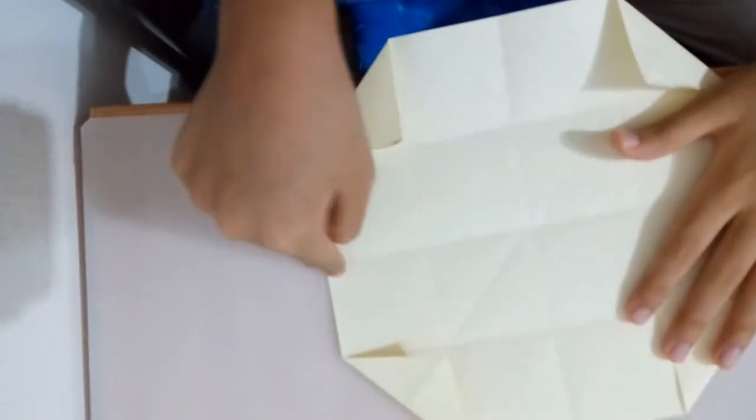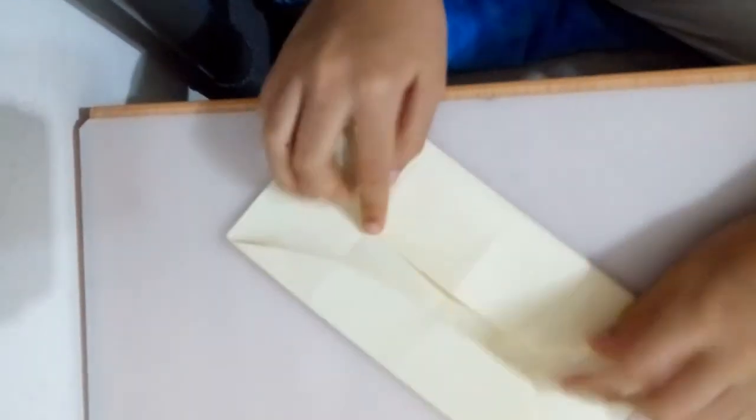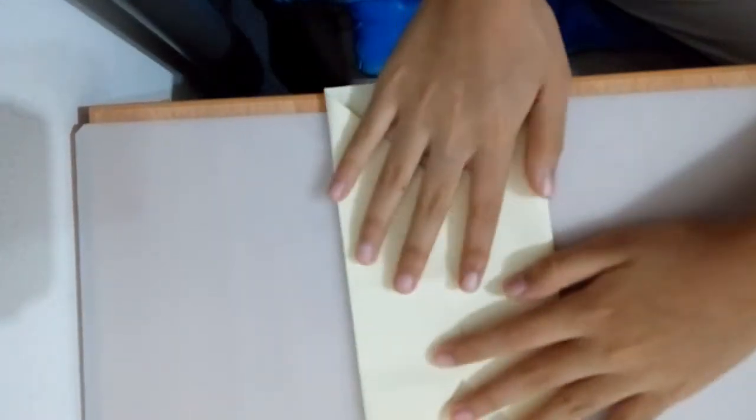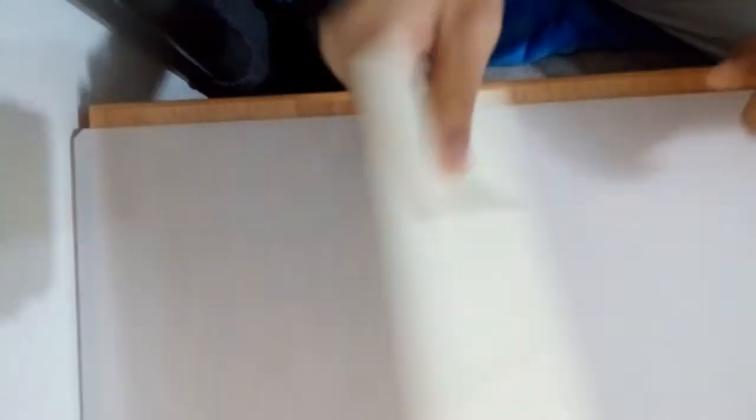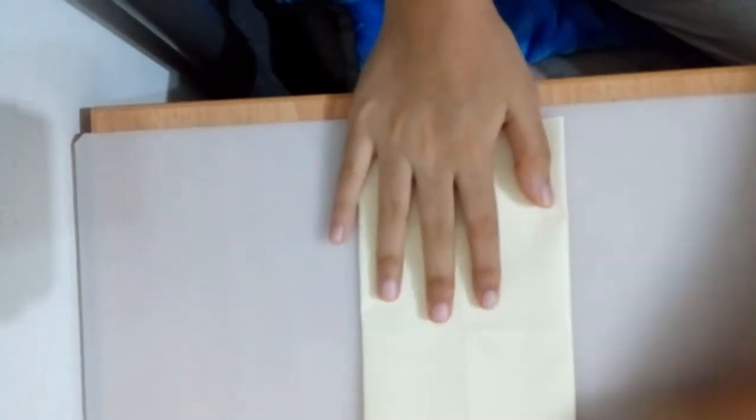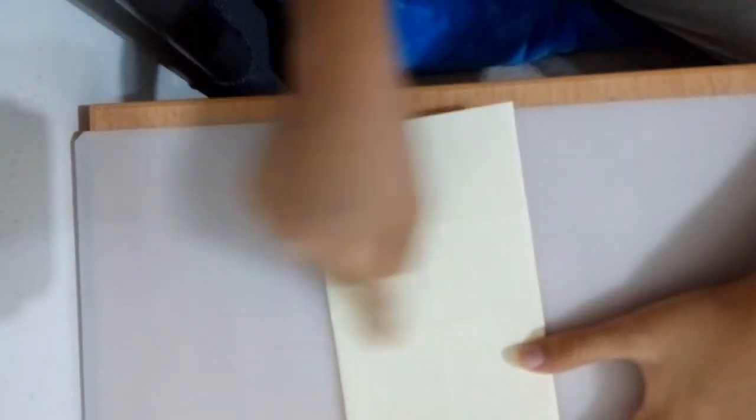Take them and keep it to the middle. Now flip it the other way. As you can see, we have three lines.